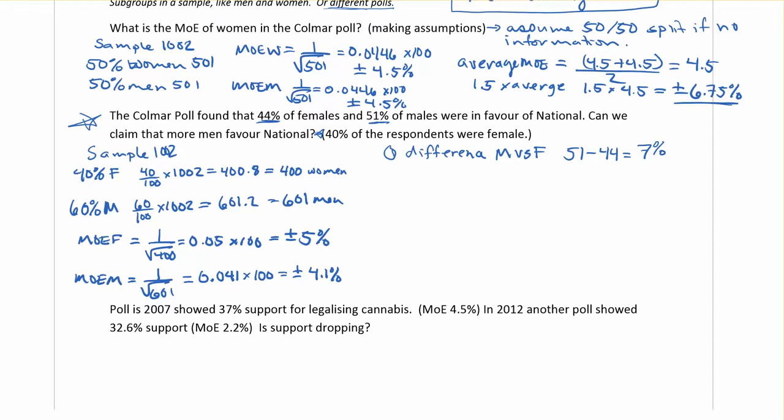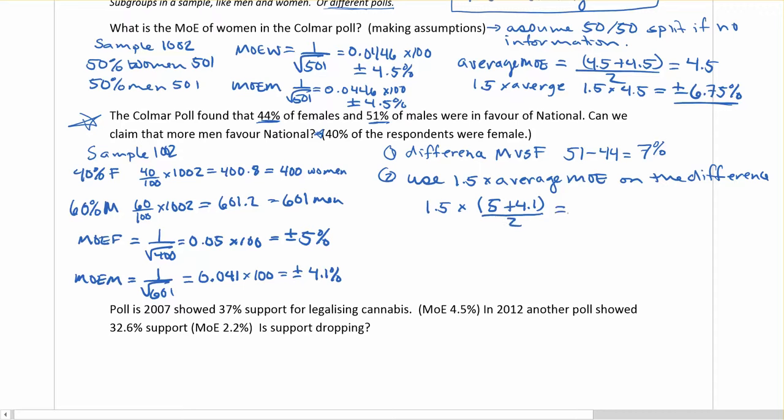So our second step is going to be to use 1.5 times the average MOE on the difference to get our confidence interval. So let's find out what 1.5 times the average is. So 1.5 times we calculate our average by adding them up. 5 plus 4.1 and dividing by 2. So this becomes, we can do it on one step or we can break it out into two steps. If you put these into the calculator, 5 plus 4.1 divided by 2, make sure you put brackets or do it in two steps. You get average and our margin of error we're going to use here ends up being 6.825%.